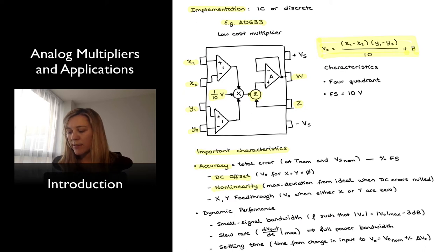The non-linearity, which is the maximum deviation of the output from the nominal or ideal output when all the offset errors are nulled or cancelled out. And the xy feed-through, the feed-through for each one of the input signals, which corresponds to the value of the output when either one of the input signals is equal to zero. Really, if one of the input signals is equal to zero, since we have a multiplier, the output should be zero. But there is a certain amount of feed-through. Feed-through typically is dependent on frequency as well, so it is a non-linear type of parameter.